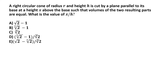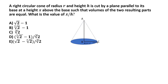We start by drawing out the right circular cone. We have BC as the radius of the base and AB as the height of the cone, so A is the apex. The radius BC is given as r and the height AB is given as h.